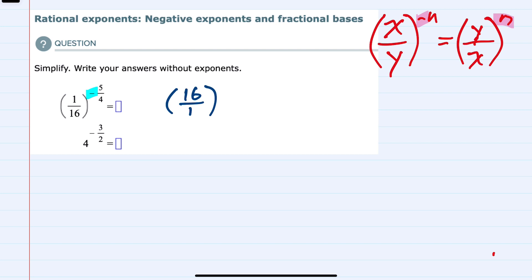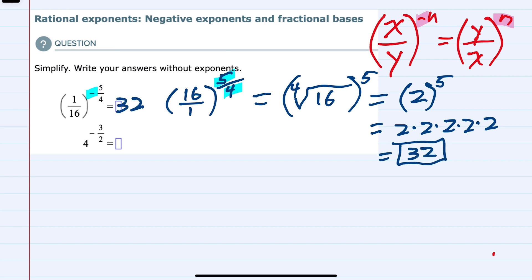That removes the negative, but the power is still now a positive 5/4, and we can simplify this by recognizing the 4 is going to be the 4th root. 16 over 1 is just 16, and then we would raise that to the 5th power. Evaluating what's inside the parentheses, the 4th root of 16 would be 2 because 2 times 2 times 2 times 2—four 2's multiplied—would be 16. But we still have to raise that to the 5th power, and five 2's being multiplied is 32. So our first example here is 32.